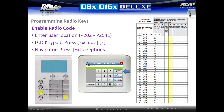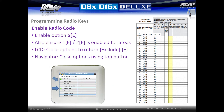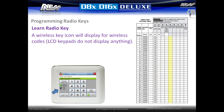Access extra options by pressing the exclude (E) button on an LCD keypad, or the extra options button on a Navigator keypad. Enable extra option 5e to enable the code as a radio code. Also ensure that 1e or 2e are enabled to arm and disarm an area. Close the extra options by pressing exclude again, or on the Navigator press the top button in the right-hand corner.